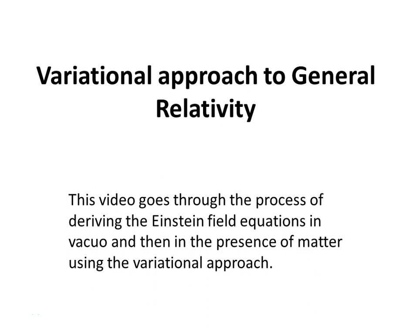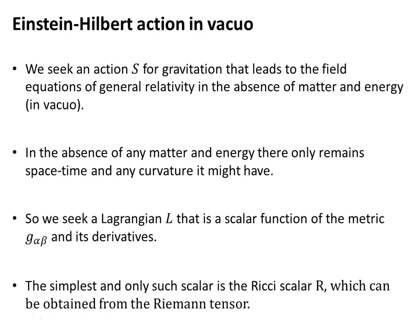In this video, we will go through the process for deriving the Einstein field equations in vacuo, and then in the presence of matter, using the variational approach. We seek an action for gravitation that leads to the field equations of general relativity in the absence of matter and energy — that is, in vacuum, in vacuo.